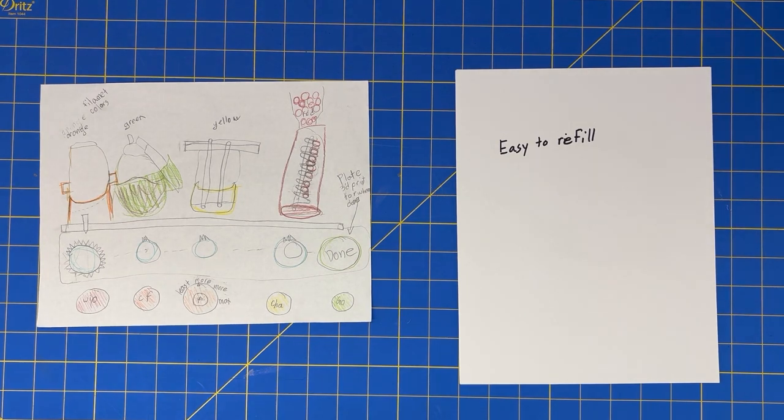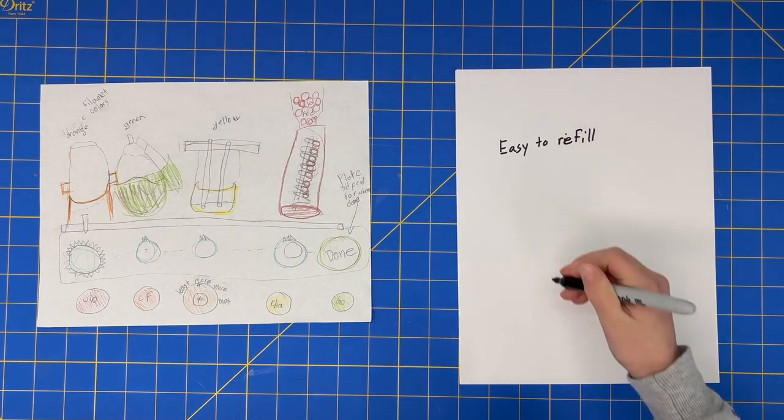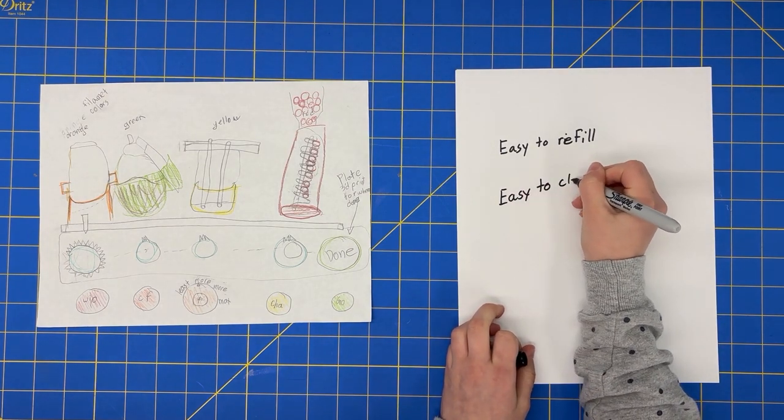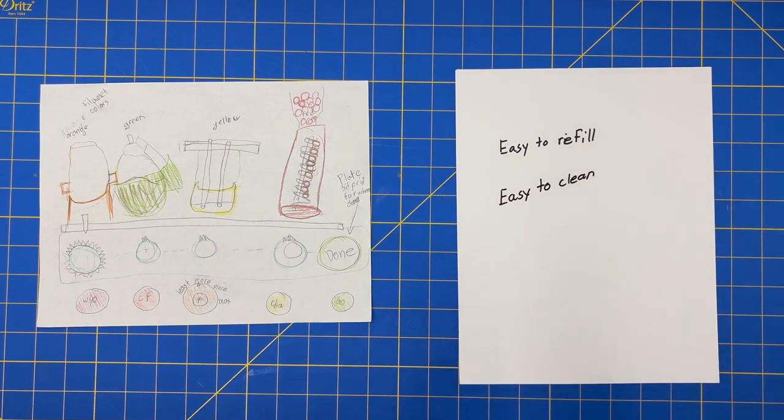Another thing we're trying to keep in mind, Clara, is easy to clean. So anything we use for the toppings we want to either be able to remove and dispose of, like in the case of the whipped cream can, or be able to easily wipe it down and hopefully not have to make too much of a mess. Keep the toppings going on to the sundaes rather than everywhere else.